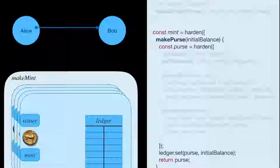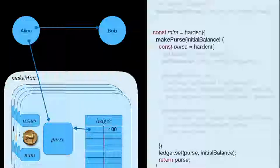Where do new units of currency come from? The mint has a method called make purse that creates a purse object and registers it in the ledger with its initial balance. This ledger is not the normal blockchain ledger — it's an object table indexed by object identities. There's no public keys here. At this level of abstraction, we don't see any cryptography; we just see symbolic object computation. Let's call make purse once to create an initial purse associated with $100 in the ledger and give that purse to Alice.